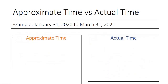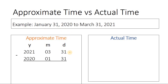Let's look at some examples. Let's compute for the approximate time and actual time from January 31st, 2020 up to March 31st, 2021. To do that for approximate time, we write the year, the month, and the date. We start with the latest date, March 31st, 2021, followed by the initial date, January 31st, 2020, and it should look like this.